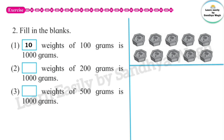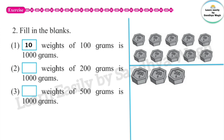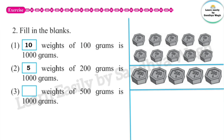Next: Dash weights of 200 grams is 1000 grams. 200 grams, one more 200 grams — that's 400 grams. Add another 200 grams — 600 grams, then 800 grams, then 1000 grams. So 5 weights of 200 grams make 1000 grams.